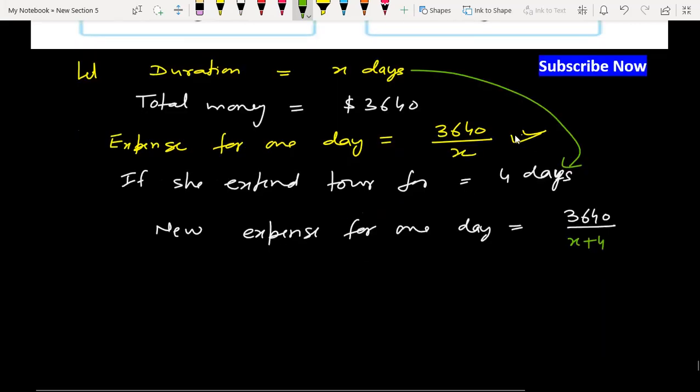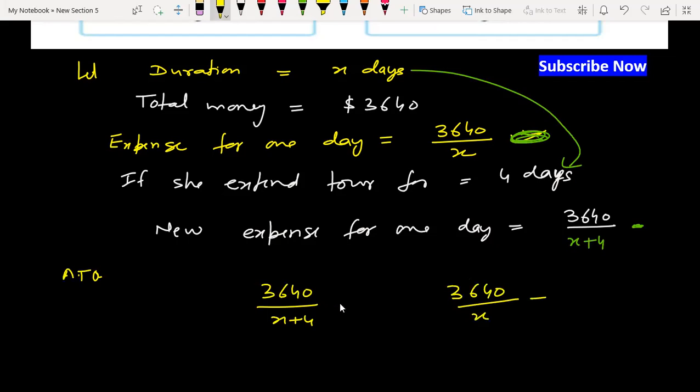Original expense is per day and new is this. According to the question, new expense per day is less than by $5 per day expenses.